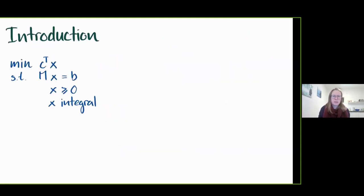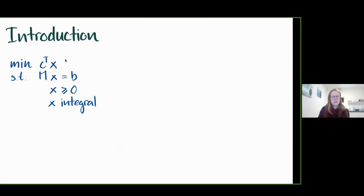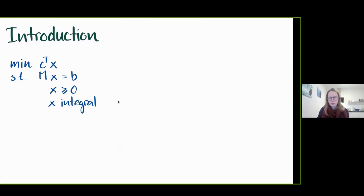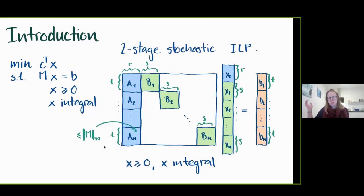First, I will introduce the two-stage stochastic integer program. We consider an integer program minimizing a linear objective function, with equality constraints where I denote the matrix by M. We ask for x to be larger than zero and integral.